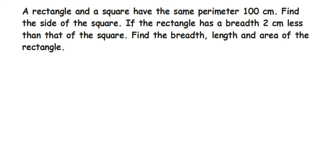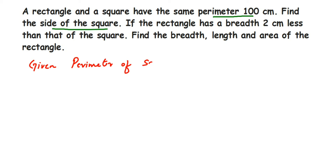We're going to go one by one. First, we're going to find out the side of the square. We know only one thing: the perimeter of both the rectangle and the square is 100 centimeters. Since I have to find the side of the square, I'm going to use the perimeter of square formula. So given: perimeter of square is equal to 100 centimeters.